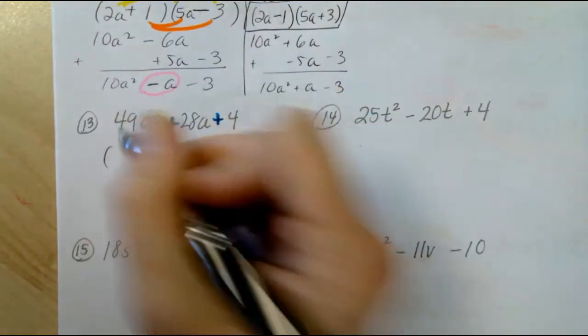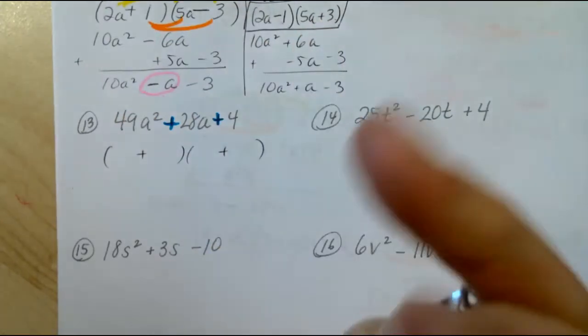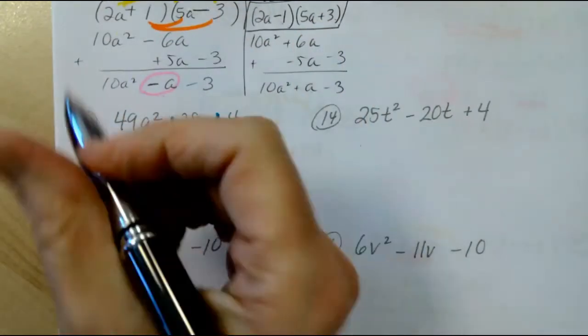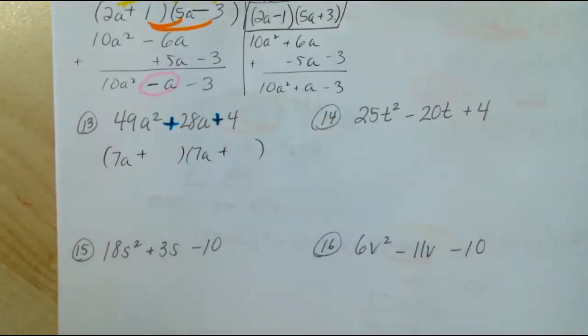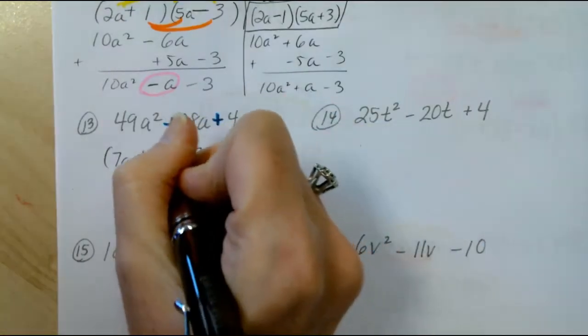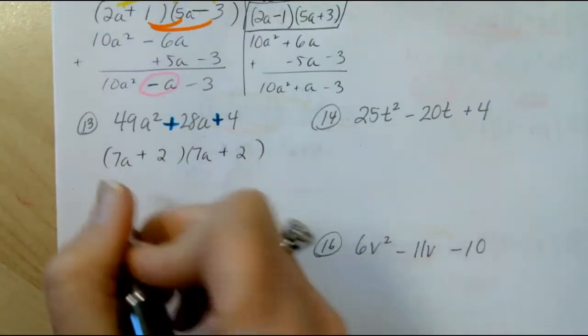Now up front, we have 49, and there's really only two ways to get 49. There's 7 and 7 and 49 and 1. It's hardly ever 49 and 1, so we're going to go 7a and 7a. Then on the end is a 4, which is also a perfect square. So let's try 2 and 2. This is my guess. My guess is followed by the check.